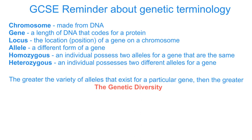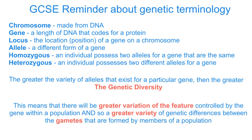The greater the variety of alleles that exist for a particular gene, then the greater the genetic diversity. This means there will be a greater variation of the feature controlled by the gene within the population, and a greater variety of genetic differences between the gametes formed. When the gametes meet, you get a wider variety of appearances in the offspring.